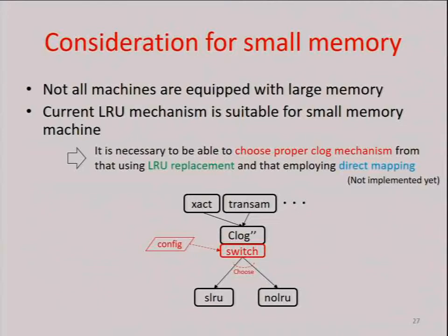There is an issue on how to implement C-Log direct mapping. The prototype always uses C-Log direct mapping. As I mentioned, the impact of using 1 gigabyte of memory for C-Log is small on modern systems, but there are systems that work with small memory. For small memory systems, it is necessary to be able to switch the C-Log mechanism by specifying a parameter in the configuration file.